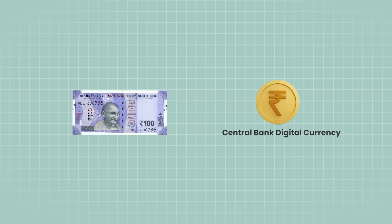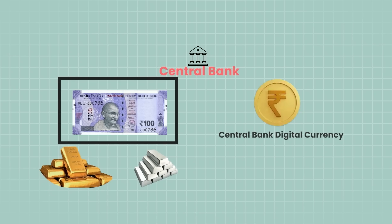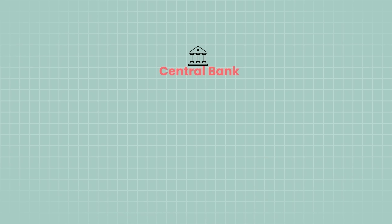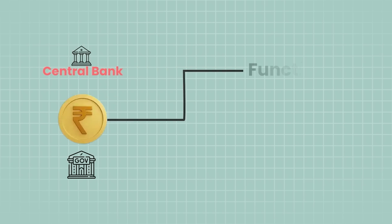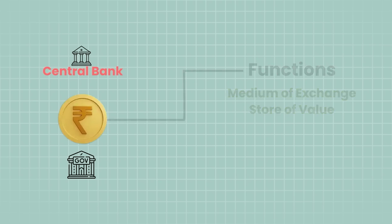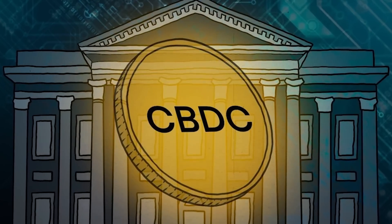Just like a 100 rupee note, a Central Bank Digital Currency is a form of currency issued by the Central Bank — it's just that instead of physical form, it is in the digital form. So it's not backed by a physical commodity such as gold or silver; it's only backed by the government that issues it. Instead of printing money, the Central Bank issues electronic coins or accounts backed by the faith and credit of the government. CBDC basically fulfills the functions of money as a medium of exchange and store of value, and you can practically exchange 100 rupees of digital rupees for a physical note of 100 rupees. The question is: how is CBDC different from sending money digitally via UPI, and how will it work?